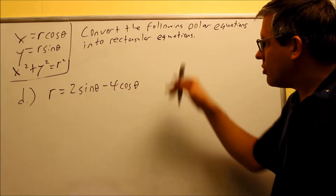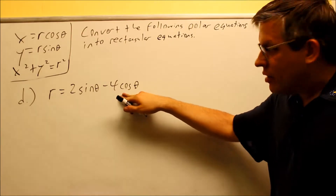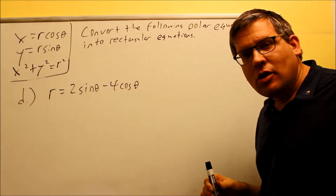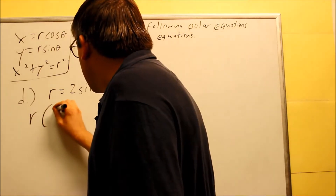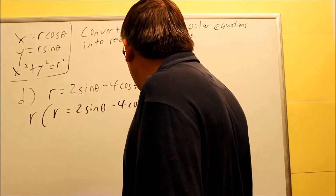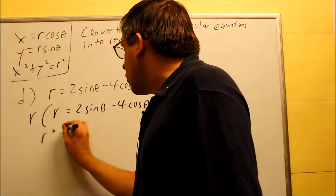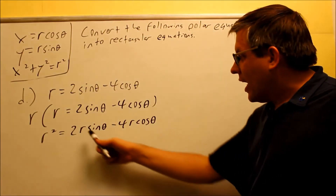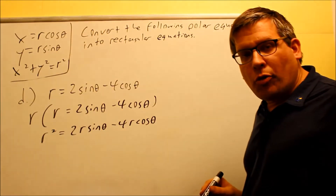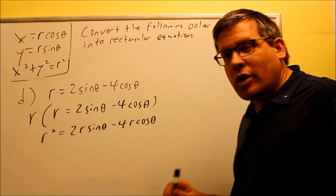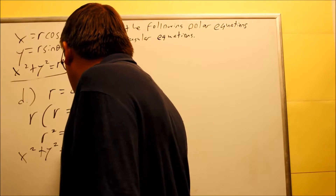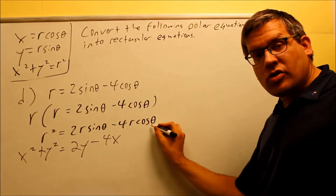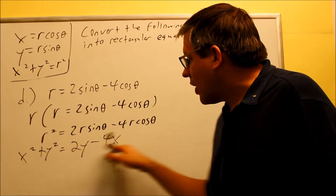Last one — part D. Convert this over into rectangular. I have a 2 sine theta and a 4 cosine theta, and I'd like an r in front of both so I can change them into x or y. So I'm going to multiply both sides by r. I have r equals 2 sine theta minus 4 cosine theta, and multiplying through by r gives r squared equals 2r sine theta minus 4r cosine theta. Now I can use all three formulas: r squared becomes x squared plus y squared, 2r sine theta becomes 2y, and 4r cosine theta becomes 4x.